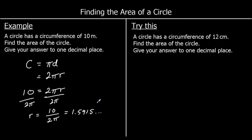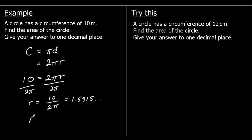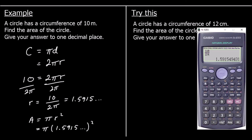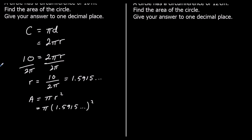So that's the radius of the circle — we used the circumference formula to find it. Now we can find the area, because the area is pi times the radius squared. So it's pi times 1.5915 and so on, squared, which we find by typing pi times our answer squared into the calculator. To one decimal place I've got 7.95 — the second decimal place is 5, so it rounds up. What comes after 7.9 is 8.0, so the answer is 8.0 metres squared.